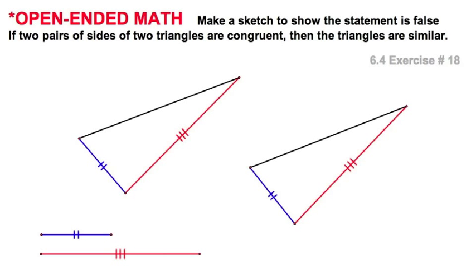Remember, that's side, side, side. Or we would need the included angle between them. Because right now, all I have to do is this, and these two triangles are not congruent at all.